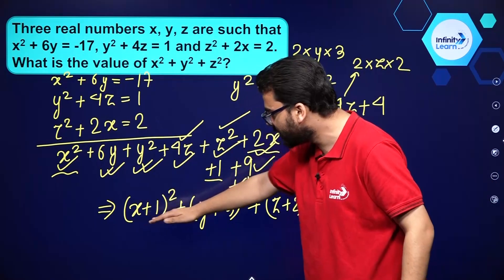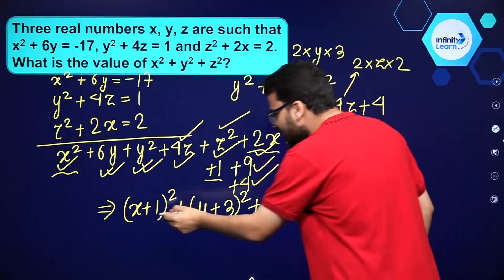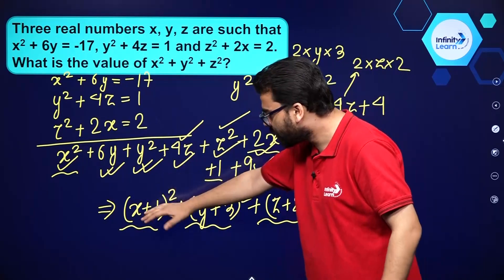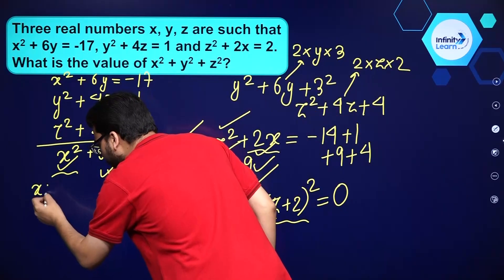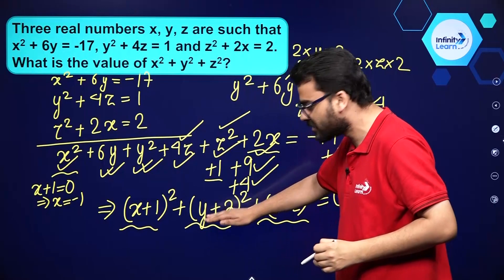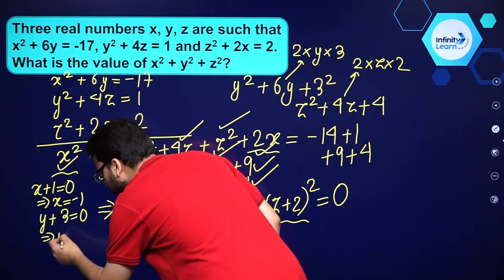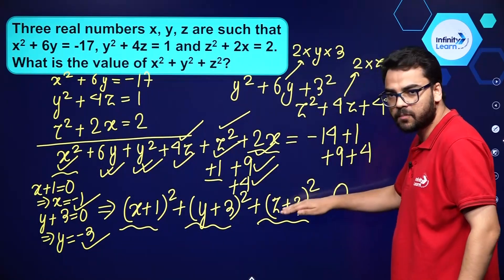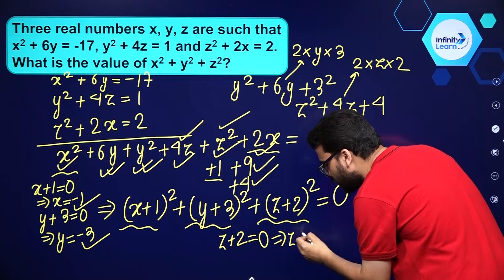So we are getting (x plus 1) whole square plus (y plus 3) whole square plus (z plus 2) whole square equals 0. These terms can never be negative since they are squares. So there is no other possibility but to take x plus 1 equal to 0, giving x equal to minus 1. Similarly, y plus 3 equal to 0 gives y equal to minus 3. And z plus 2 equal to 0 gives z equal to minus 2.